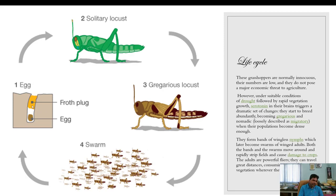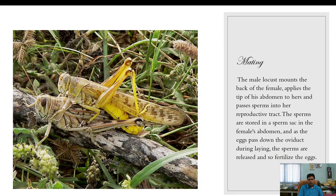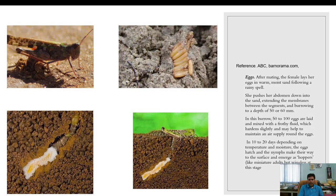During mating, the male locust mounts the back of the female, applies the tip of his abdomen to hers, and passes sperm into her reproductive tract. The sperm are stored in the sperm sac in the female abdomen, and as the eggs pass down the oviduct during laying, the sperm are released and fertilize the eggs.